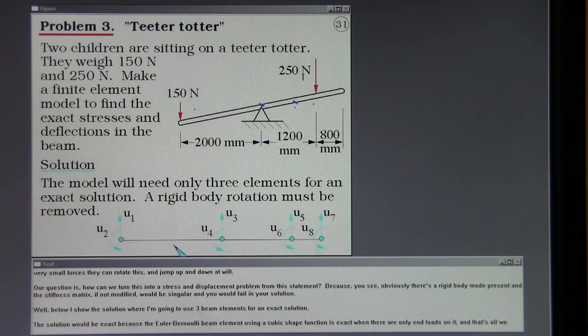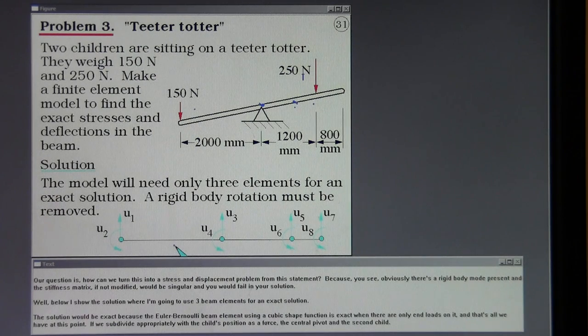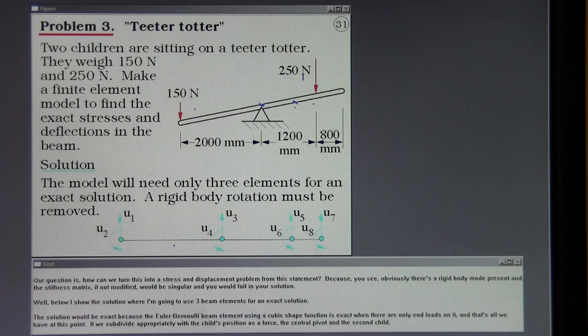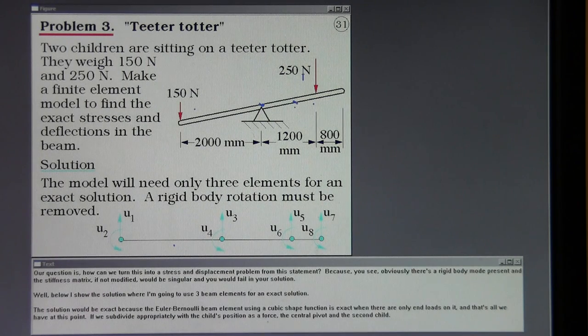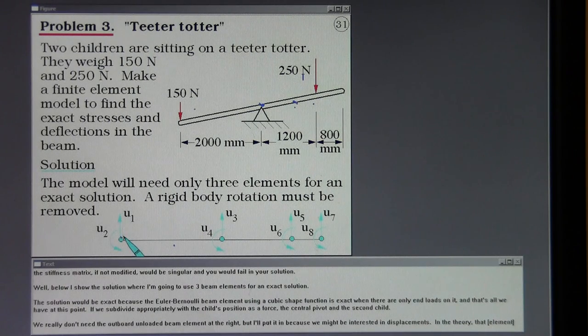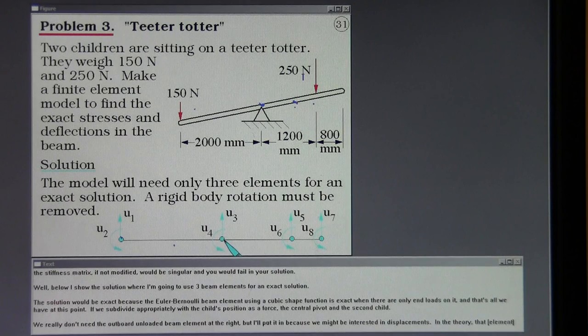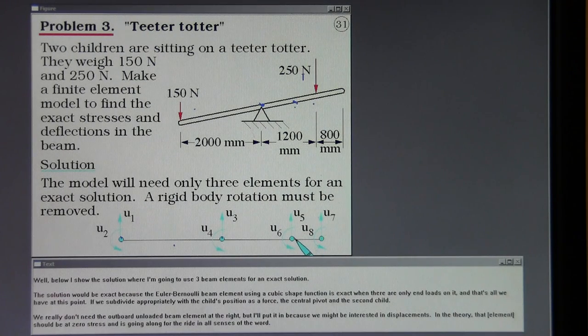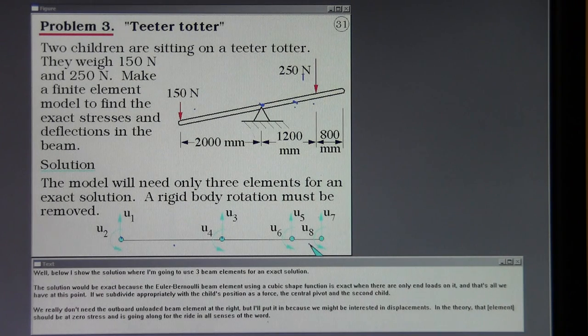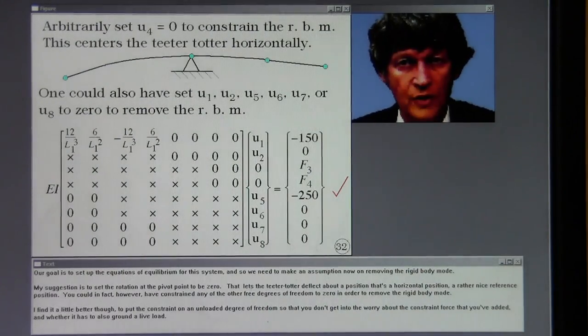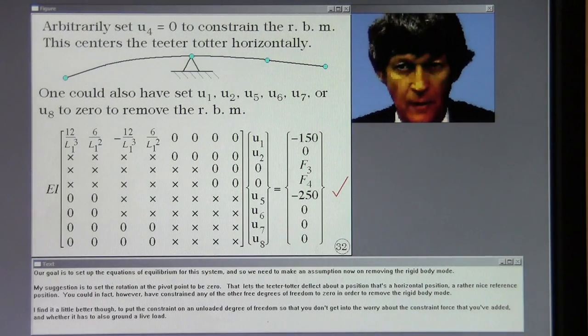Well, below I show the solution where I'm going to use three beam elements for an exact solution. The solution would be exact because the Euler-Bernoulli beam element using a cubic shape function is exact when there are only end loads on it. And that's all we have at this point if we subdivide appropriately with the child's position as a force, the central pivot, and the second child. We really don't need the outboard unloaded beam element at the right but I'll put it in because we might be interested in displacements. In the theory that should be at zero stress and is going long for the ride in all senses of the word.